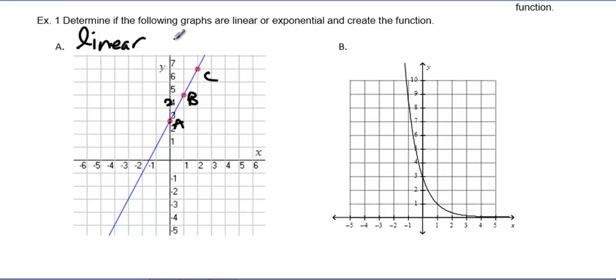If you remember, slope intercept form would be y equals mx, m is the slope, plus b, which in this case is the y-intercept, in this case it's 3.